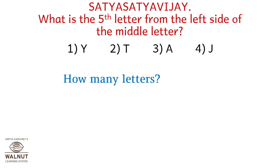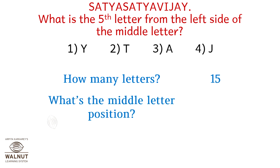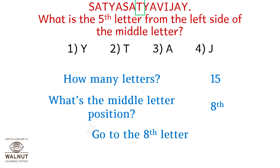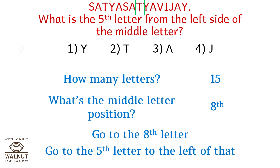How many letters are there in that word? There are 15 letters. The middle letter position is 15 plus 1 upon 2, which is the eighth position. The eighth letter is T. Going to the fifth letter to the left of that: A, S, A, Y, and then T. So T is the fifth letter from the left side of the middle letter, which is option two.